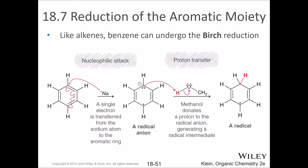Here's the big reaction in section 18.7: the Birch reduction. Alkenes can undergo a Birch reduction. You take sodium metal — it shows up with one electron in its outer shell — and sodium metal will donate that one electron to the carbon.